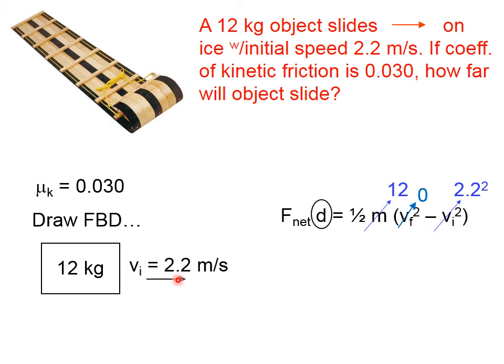This object is sliding to the right. It has a weight, a normal force, and friction acting on it. The weight and the normal force are equal, 12 times 9.81 is 117.72. The friction force, then, is equal to the coefficient of kinetic friction, 0.030, times the normal force of 117.72. That gives us this tiny number, 3.53 newtons.